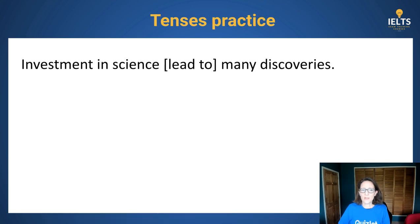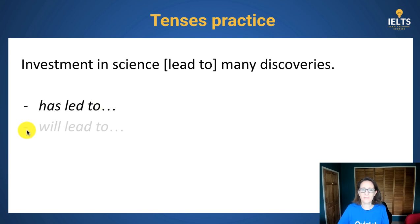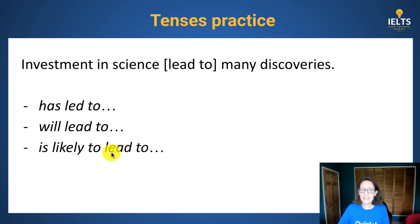Try this one: 'Investment in science' — the verb is 'lead to many discoveries.' What choice of tense would you use? For example, 'it has led to' — present perfect, general, no specific time. 'Will lead to' — in the future, prediction. 'Is likely to lead to' — is less sure.